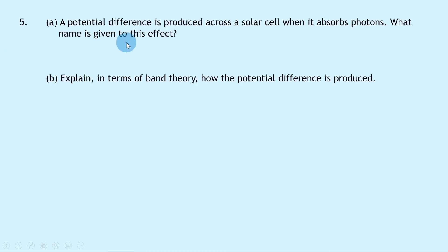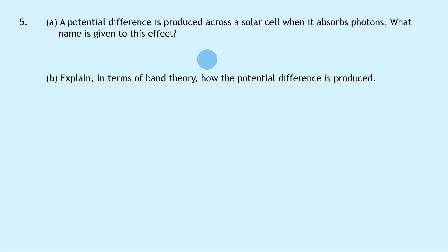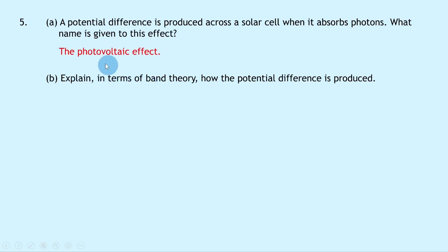Question 5a says that a potential difference is produced across a solar cell when it absorbs photons — what name is given to this effect? Remember solar cells work in a sort of opposite way to how LEDs work, so we can produce a potential difference when light is absorbed by the solar cell. The name given to this effect is the photovoltaic effect — photo meaning light and voltaic referring to voltage.